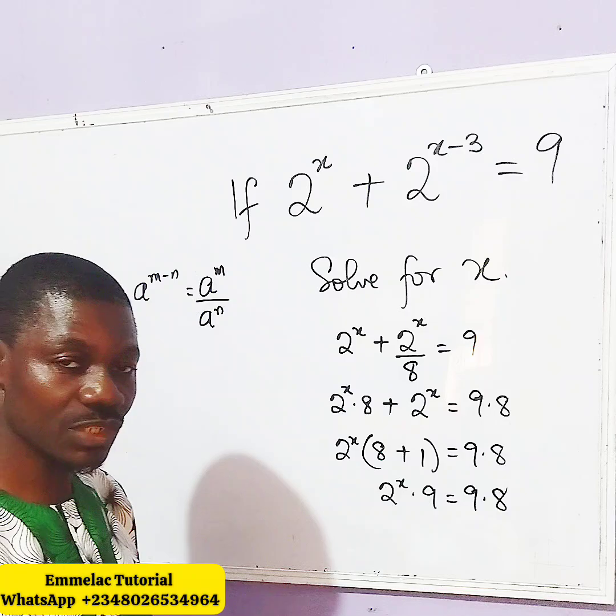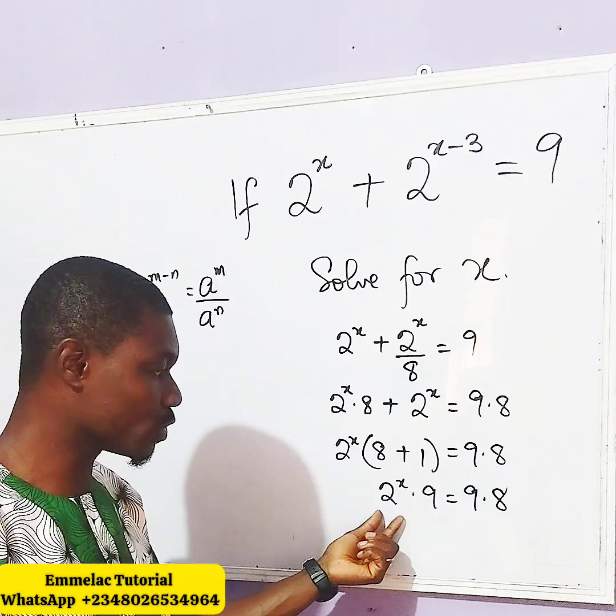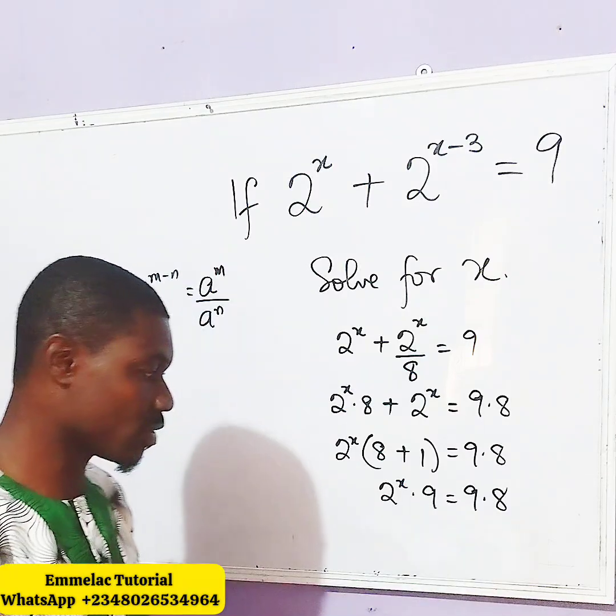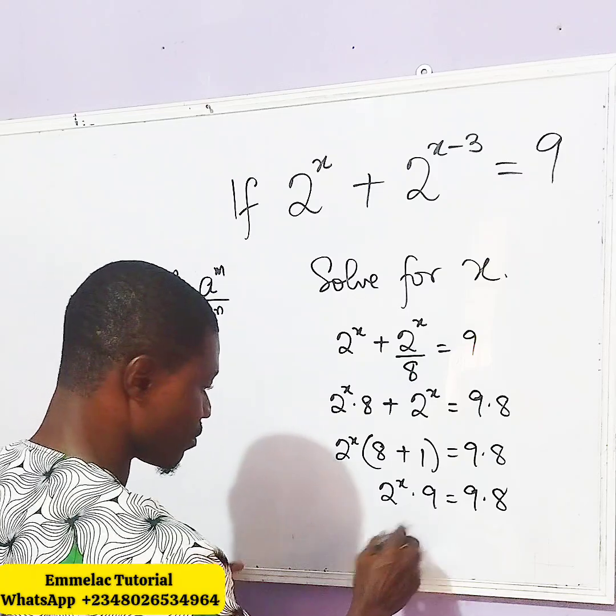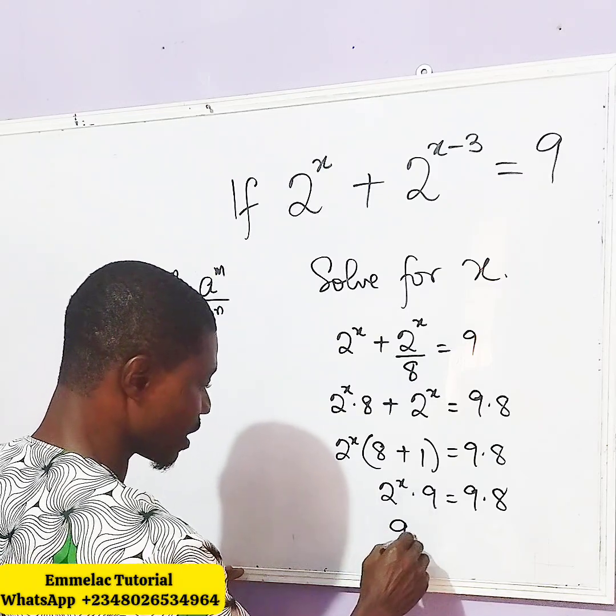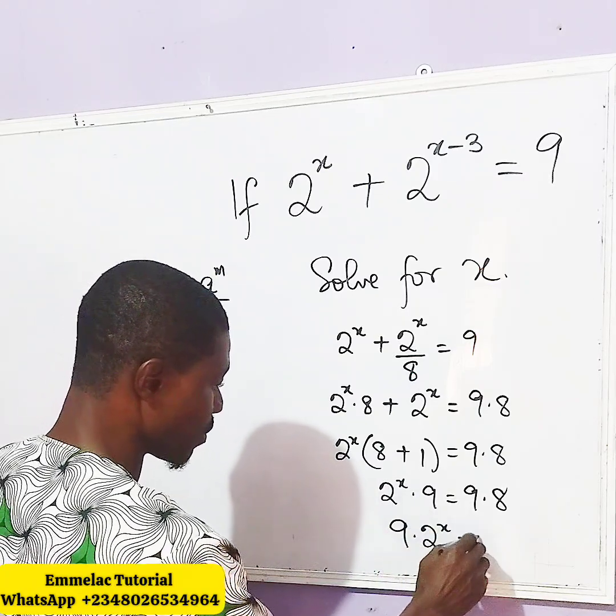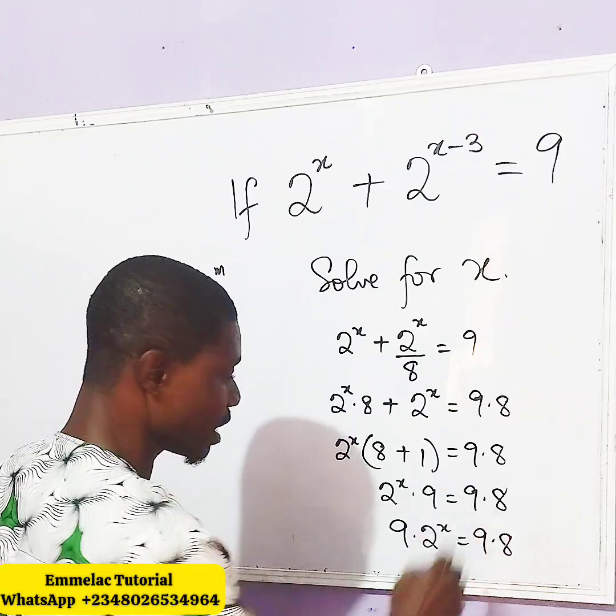By comparison, we can actually say that 2 raised to x equals 8. That is by saying, we arrange it by saying 9 times 2 raised to x equals 9 times 8.